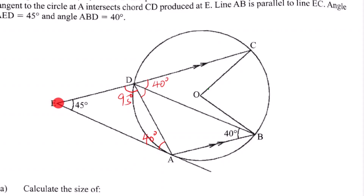Looking at the straight line EDC, we have angles 95 and 40 already placed. Using the property that angles on a straight line add up to 180: 95 plus 40 equals 135, so the remaining angle is 45 degrees. Adding these: 135 plus 45 equals 180, confirming the straight line property.